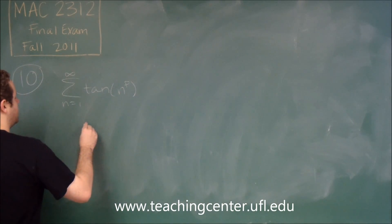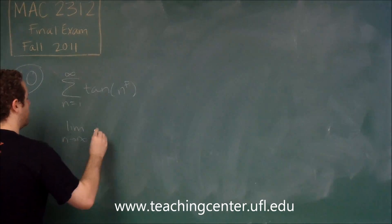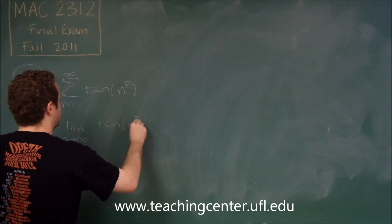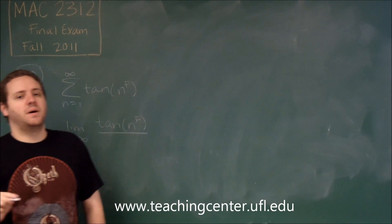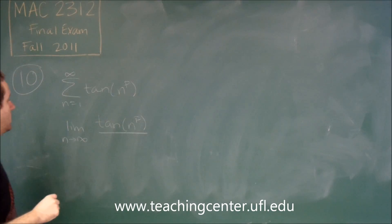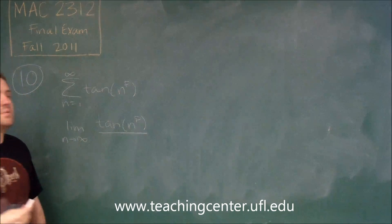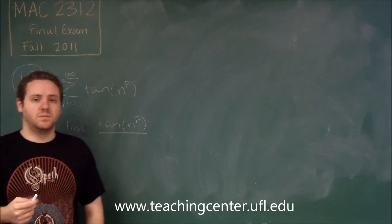Remember the limit comparison test says if you take the limit as n goes to infinity of two series and it's equal to a finite positive number, then those have the same convergence or divergence. So we want to compare tan of n to the p to something that will give us a finite positive number.